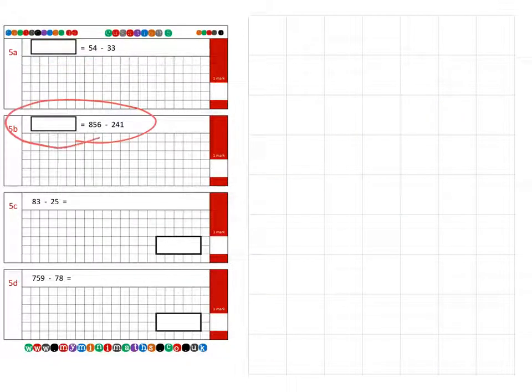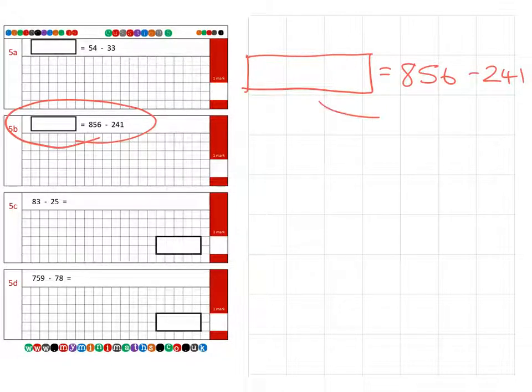Next, the second question, 5b. Again, I have the missing answer in the box, which equals 856 subtract 241. We can swap these around if we wish, if it makes it easier for you to understand.